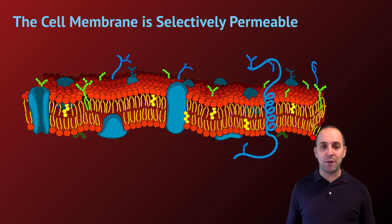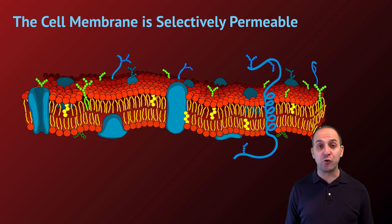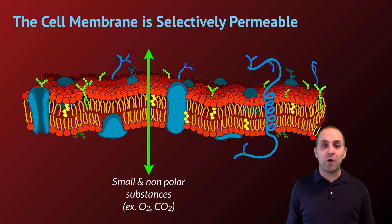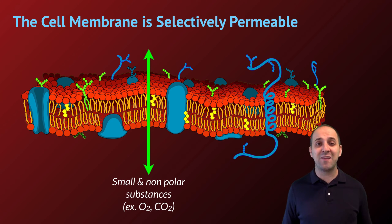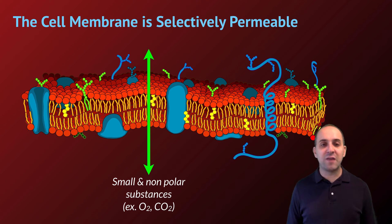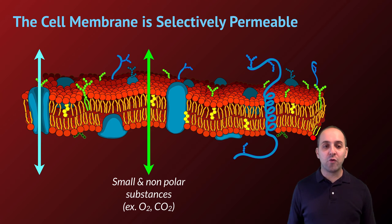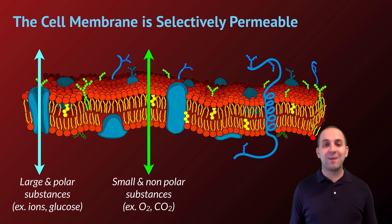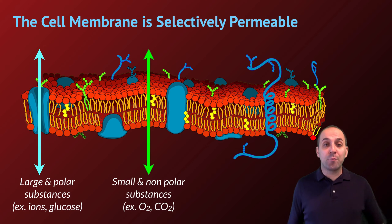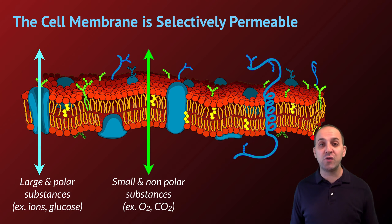The cell membrane is selectively permeable. Things can move across it — that's what we mean by permeable — but not just anything can move across it; it is selective in what it allows through. It acts as a filter, actually a much fancier filter than any humans have ever been able to create. Small, nonpolar molecules like oxygen or carbon dioxide can diffuse right through the hydrophobic tail region of the bilayer. But larger molecules, or molecules that are polar or have charges, cannot go through the bilayer directly — they need to go through a protein channel in the membrane, which is one of the major protein components of any cell membrane.